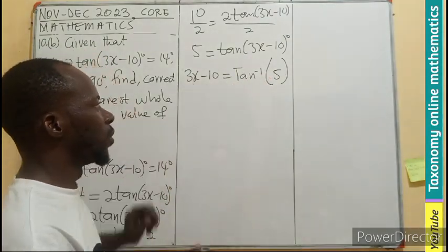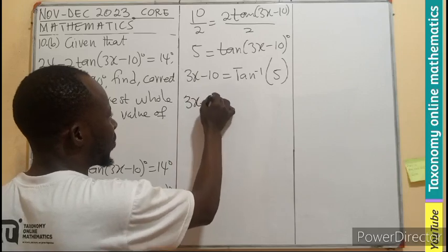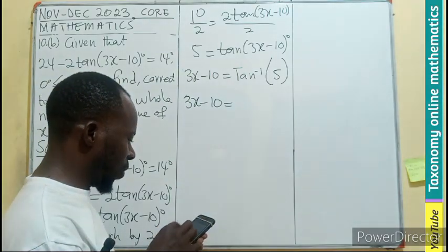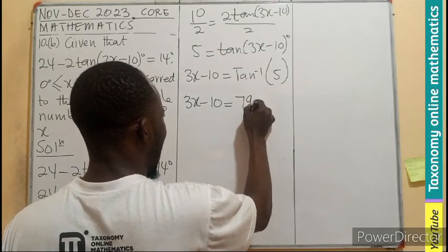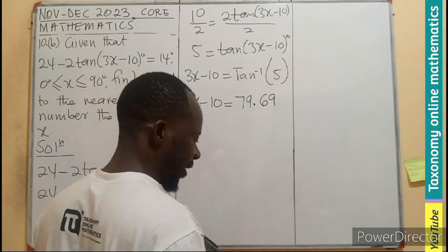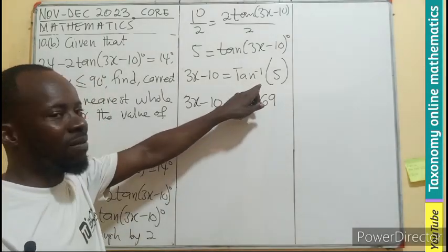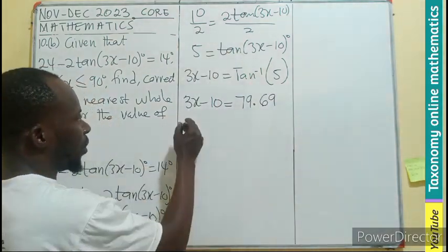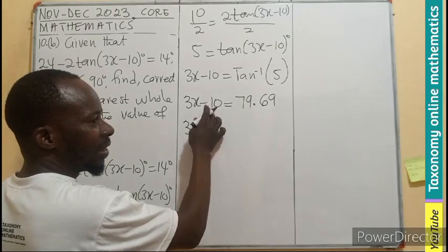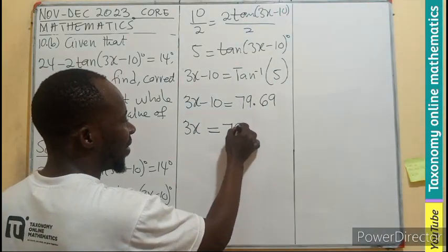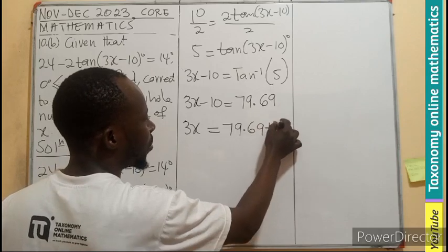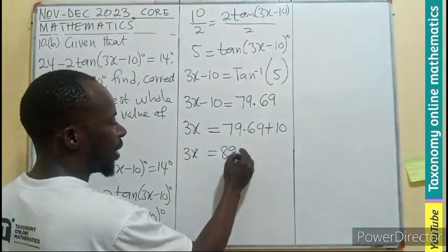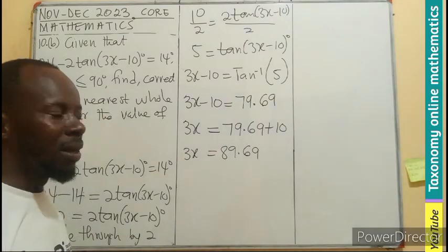Don't forget this will be left alone. And this will give us 3x minus 10 equals the tan inverse of 5, which gives us 79.69. So that is what we have for the tan inverse. But don't forget we are now going to solve this again as an equation. Sending this to the other side, meaning 3x if I add 10 to both sides, this will become 79.69 plus 10.